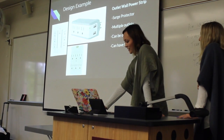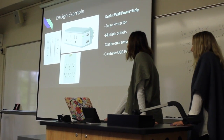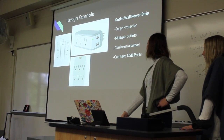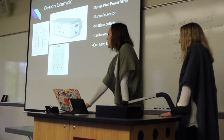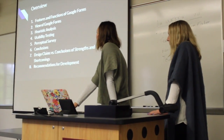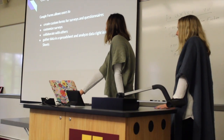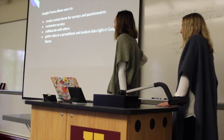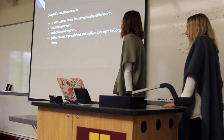So here's our analysis. We chose to do Google Forms. Here's our design example that changes the way you behave: we did an outlet wall power strip. You can buy them in different configurations — a surge detector, multiple outlets, on a scroll with USB ports — so you can plug in way more than originally, which changes where you place things in your house and your behavior.